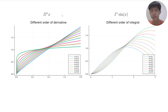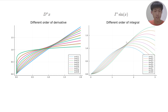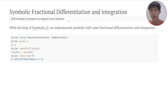Here is the different-order plot of the gamma function — the different order derivatives of x, and the integrals of x. These two parts are generated from FractionalCalculus.jl. With the help of Symbolics.jl and SymbolicUtils.jl, we implement symbolic half-order fractional differentiation and integration. Although these features are still a work in progress, I think they can help researchers a lot.